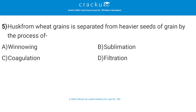Husk from wheat grains is separated from heavier seeds of grain by the process of — the correct answer is A — winnowing. Husk is separated from heavier seeds of grain by winnowing. The difference in the size of particles in a mixture is utilized to separate them by the process of sieving and filtration.